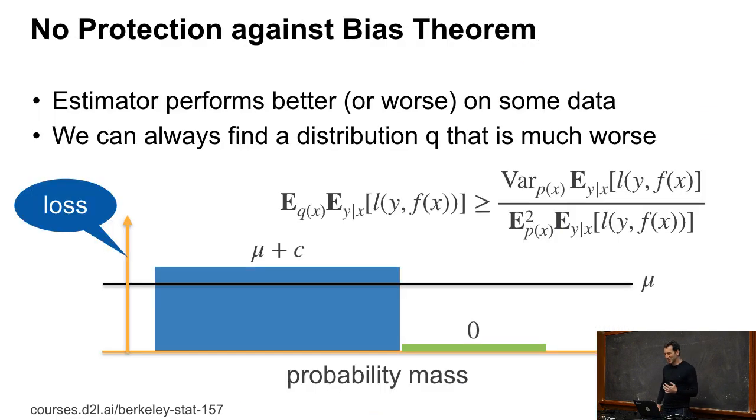So now let's actually quantify this mathematically. There's a tiny little theorem here, and I'll give you a bit of the reason of what's going on. I'm calling this the no protection against bias theorem. Essentially, what it tells you is that if I have some estimator which, on average, gets you some accuracy mu, some performance mu.